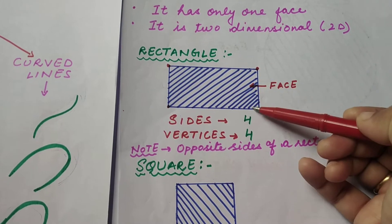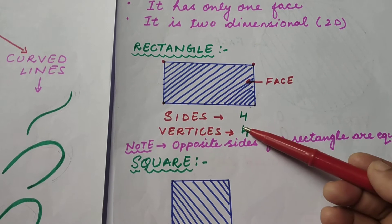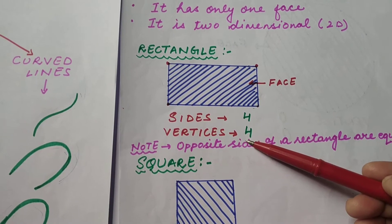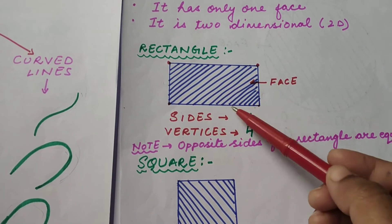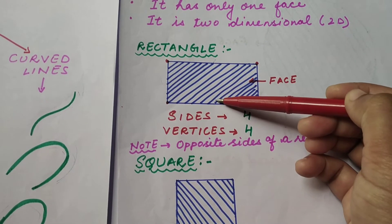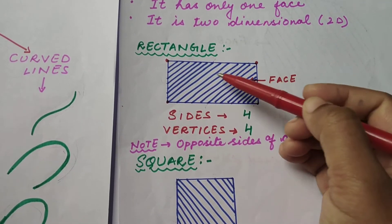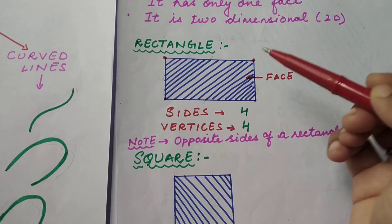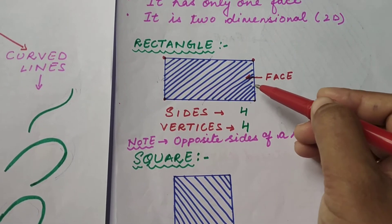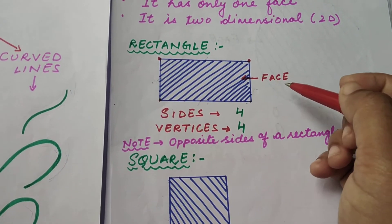Vertices means corners. How many vertices are there? One, two, three, four — four vertices. And sides: one, two, three, four — four sides. The opposite sides of a rectangle are equal. This is the breadth and the opposite breadth is the same. The length is also the same on opposite sides.